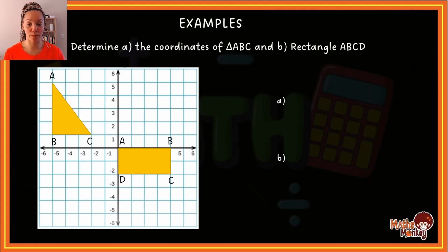Right. So the first example here, determine A, the coordinates of triangle ABC and B, the coordinates of rectangle ABCD. So here you'll see this is a triangle ABC, it has got three points, right. And they want to know what is the coordinate for each point. So I'll first start with A. And obviously I start with the x-axis. So I go towards the x-axis, so that's -5. And towards the y-axis it's 5. So A's coordinate is (-5, 5). Please always remember that the x-value must always go first.